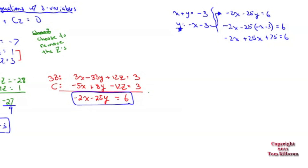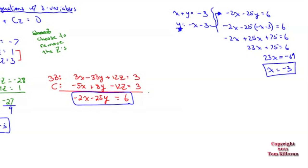Combine like terms: 23x plus 75 equals 6. Subtract 75: 23x equals negative 69. Divide by 23 and x equals negative 3. All that work and we finally found one variable.